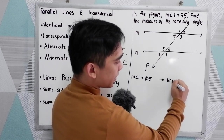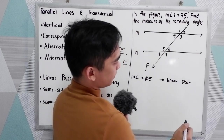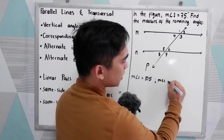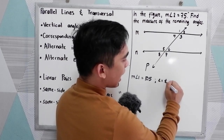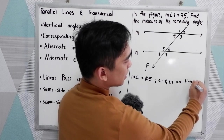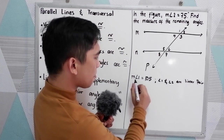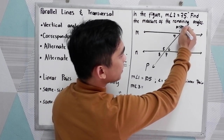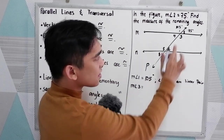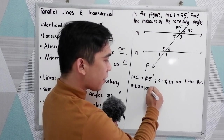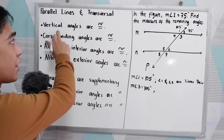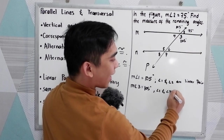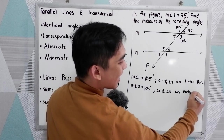The reason is that angle 1 and angle 2 are linear pairs. Next, measure of angle 3. If angle 1 is 105 and angle 2 is 75 degrees, then measure of angle 3 is also 105 degrees. Why? Because vertical angles are congruent — angle 1 and angle 3 are vertical angles.